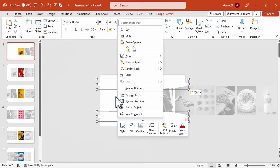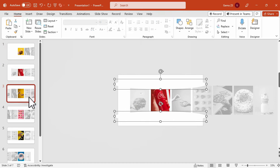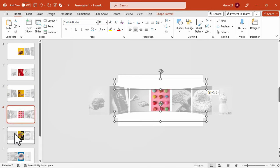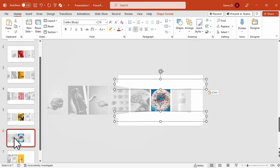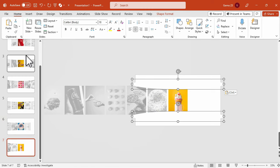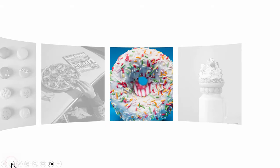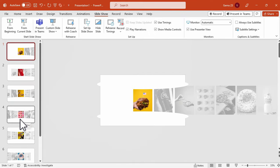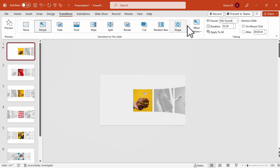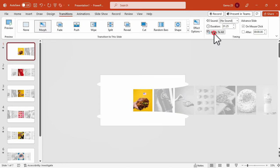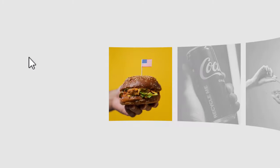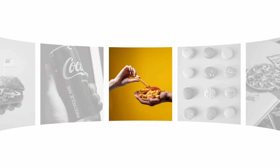Once accomplished, we can copy and paste that onto the next slides. Now let's take a look at the progress — we have successfully achieved the panoramic effect for the photos. The next step is to apply the morph transition to all the slides. Make sure to apply this transition to all slides with a timing of 1.25 seconds, or adjust according to your preference. This is how it should look, and as you can observe, we have now achieved a carousel effect for these images.